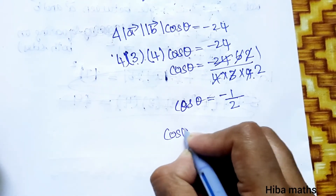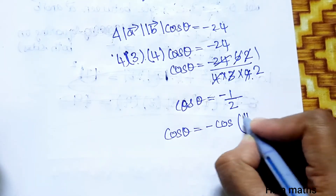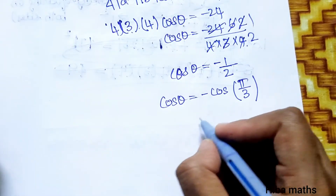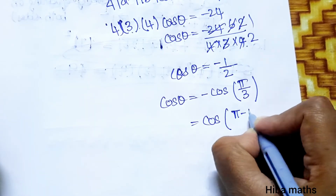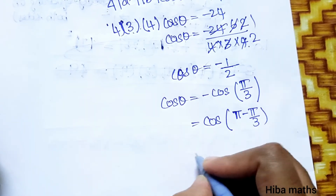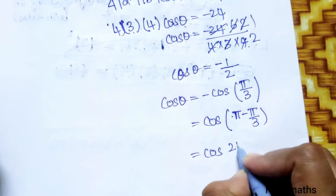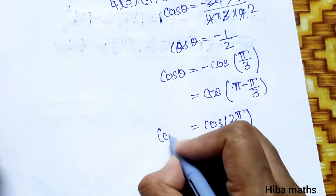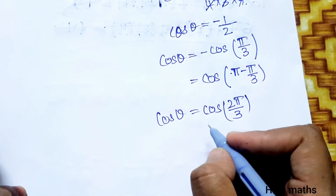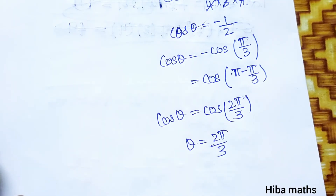cos theta equals minus 1 by 2, which equals minus cos(pi by 3), which equals cos(pi minus pi by 3), that is cos(2pi by 3). Therefore theta equals 2pi by 3. Please write your answer in the comment section. Thank you so much for watching.